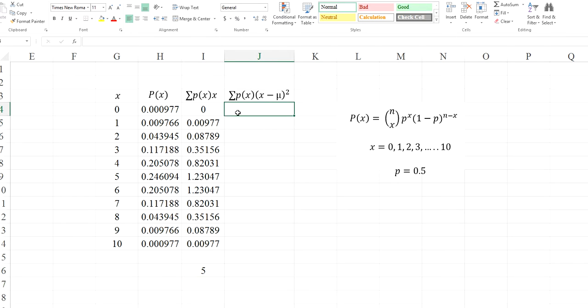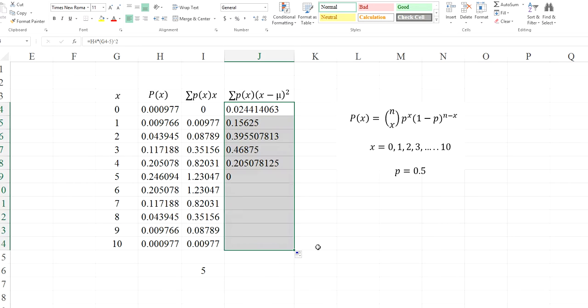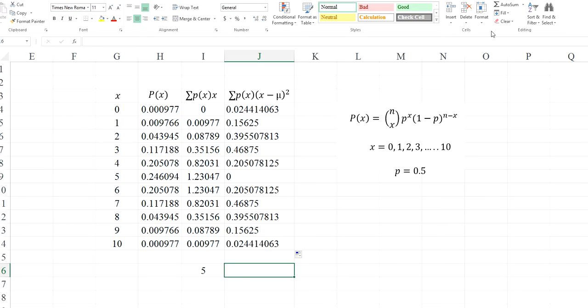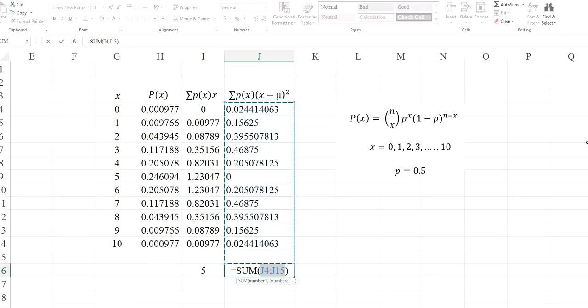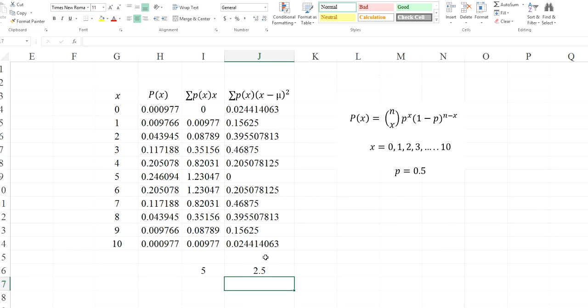What about the variance? Equal to P times X minus 5 square. Now I have done the first component of the variance. For the rest of the components, I drag and drop. It is done. Now I can do the sum, because I need to do the sum. Here's the sum. So 2.5. This is a traditional way of computing the mean and variance of any probability distribution.